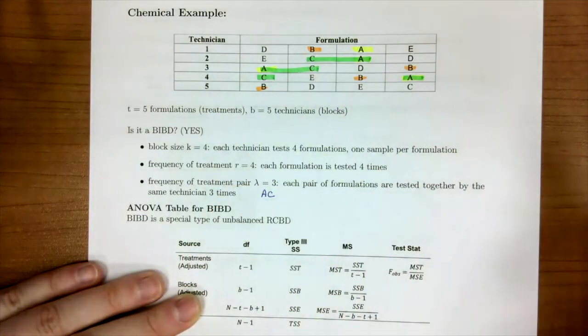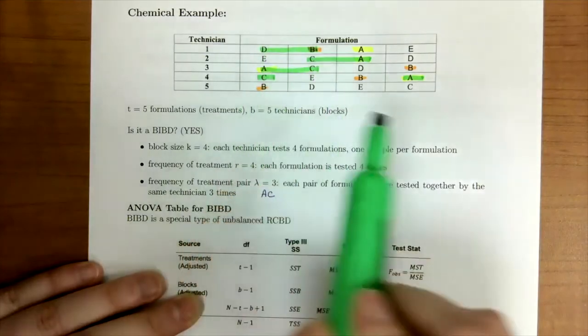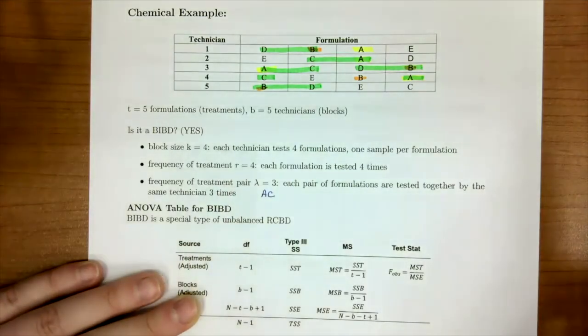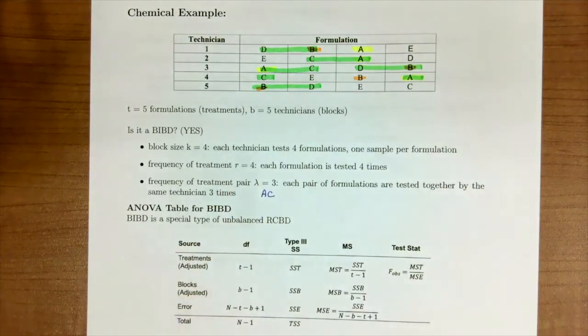We could do this again for maybe b, d. So we have b, d, b, d, and b, d. And so you're looking at how many times that pair comes up.